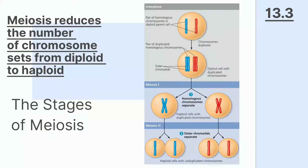Selanjutnya kita akan membahas tahapan-tahapan meiosis. Meiosis didahului proses replikasi kromosom. Meiosis terbagi dalam dua set pembelahan yaitu meiosis I dan meiosis II. Dua set meiosis ini menghasilkan empat sel anak, di mana tiap sel anak hanya memiliki setengah dari kromosom induknya. Pada meiosis I, kromosom homolog akan terpisah dan membentuk dua haploid sel anak. Sedangkan pada meiosis II, kromatid akan terpisah dan menghasilkan empat sel anak.